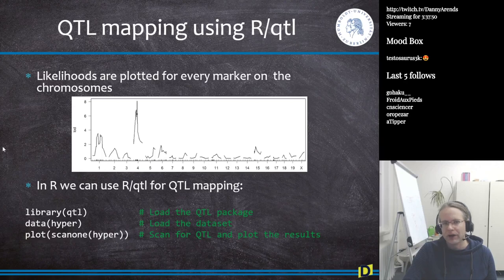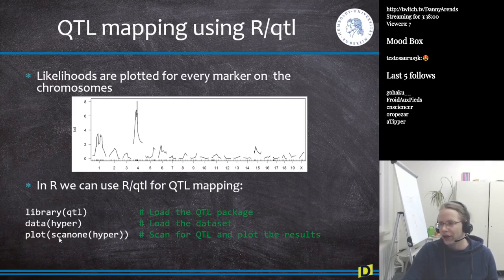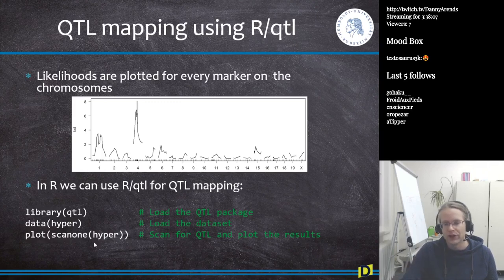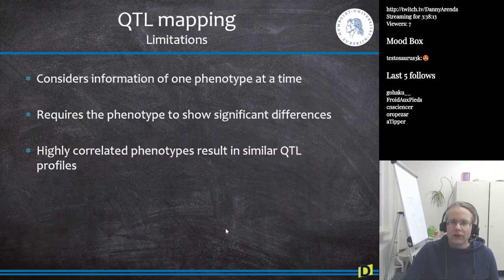Log likelihoods are plotted for every marker on the chromosome. We already saw this. And then in RQTL, I also showed you how to load the library. So we load the library, we load the data set, and in RQTL you have to use the scan one function to do a QTL scan if you don't want to do the t-test yourself. And then you call the plot function, which generates this. So there are some serious limitations in QTL mapping.